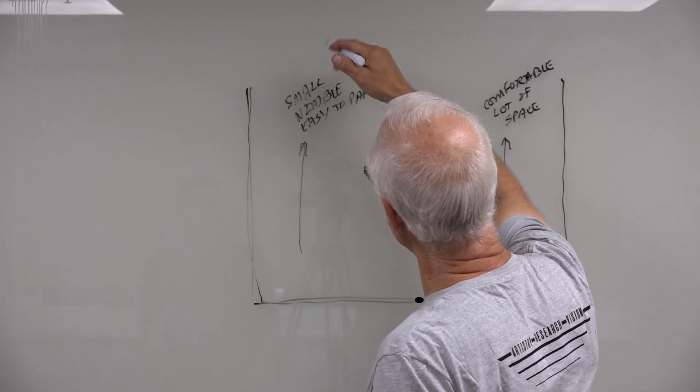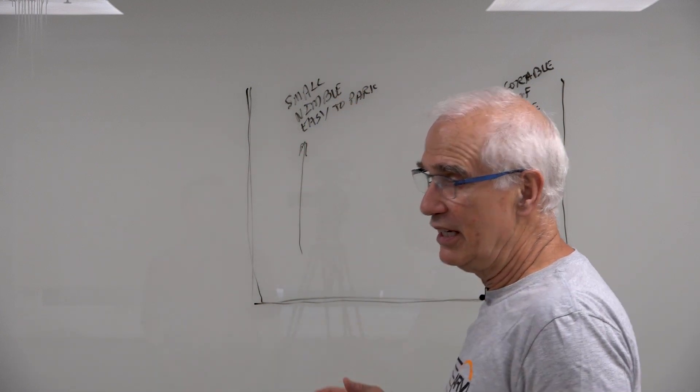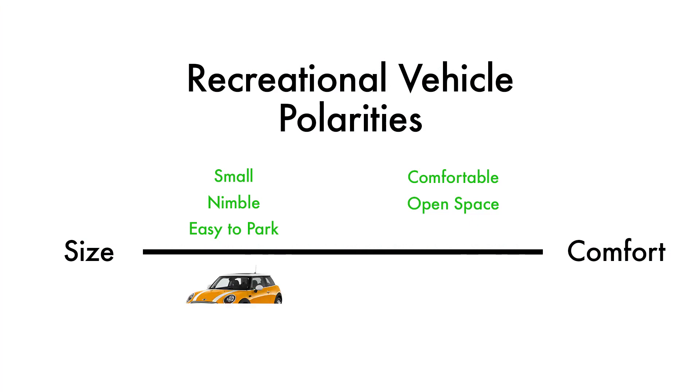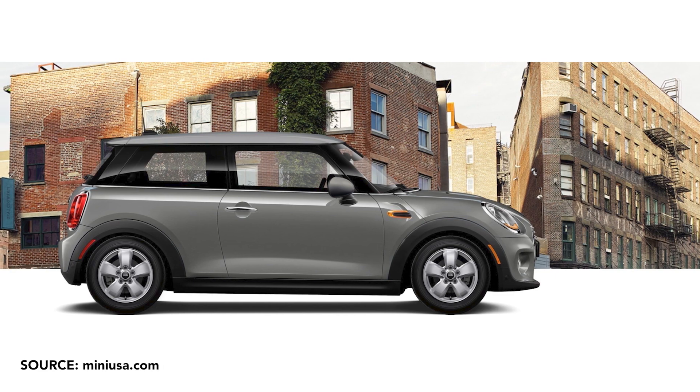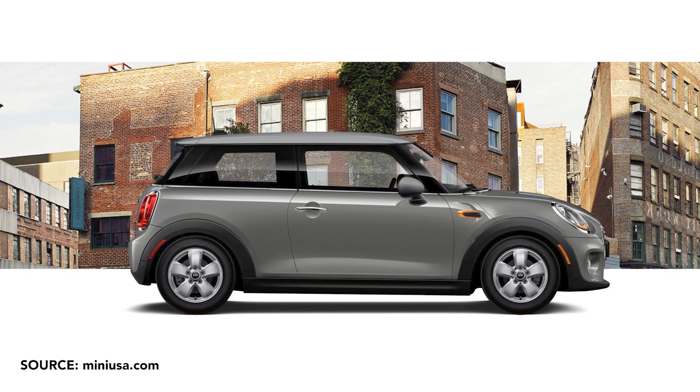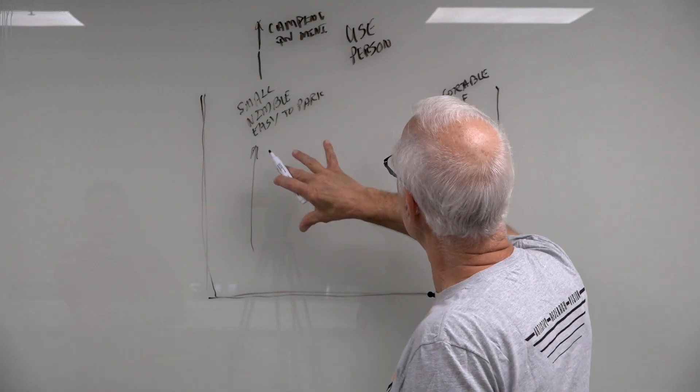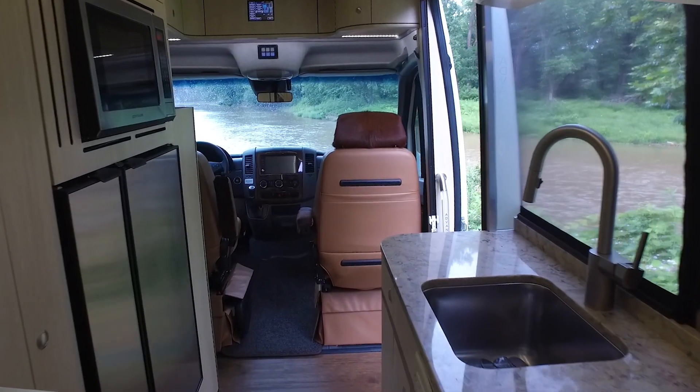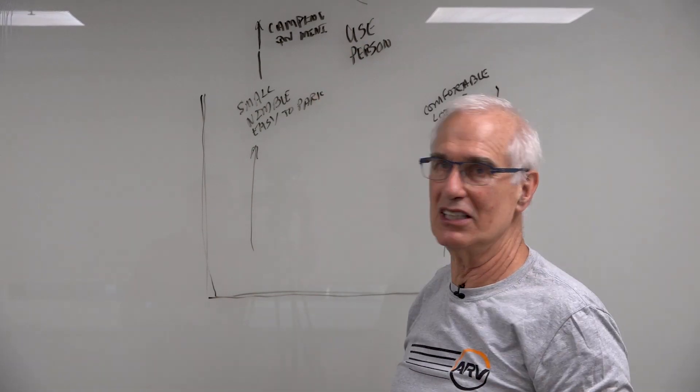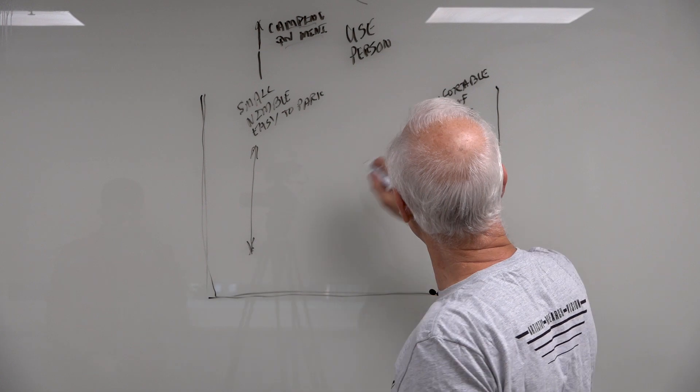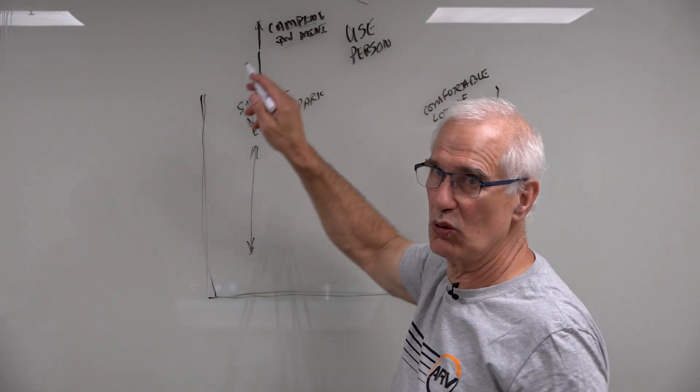And if you go small and nimble to the extreme, and my extreme may not be your extreme, but a good example is camping in a mini. The mini is great for sliding around the development, but not necessarily what people would want for long trips. And when you get this balance of small and nimble and easy to park with comfortable, a lot of space, when that's balanced, it's perfect for you.